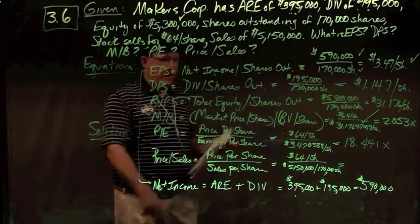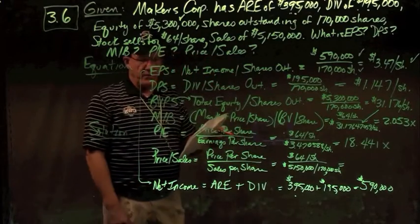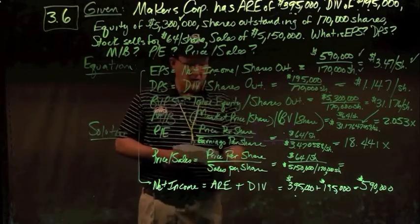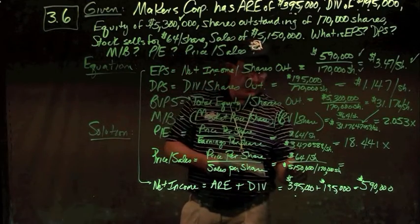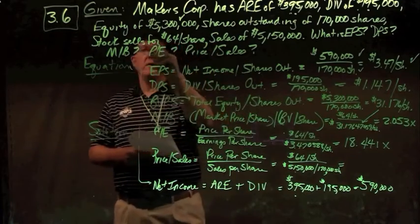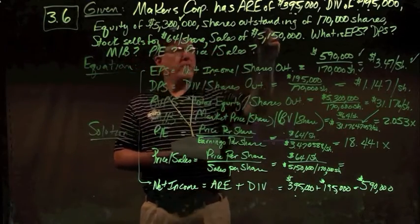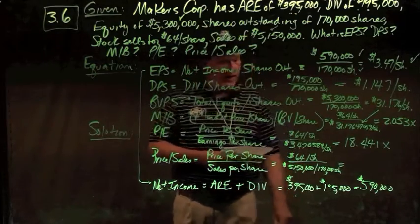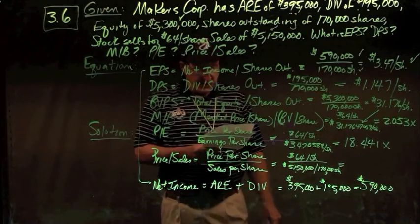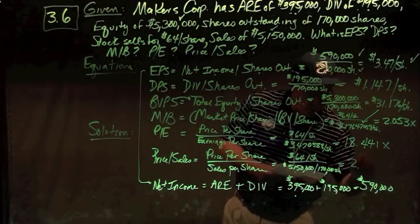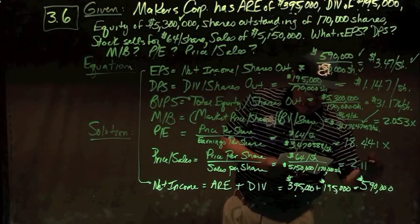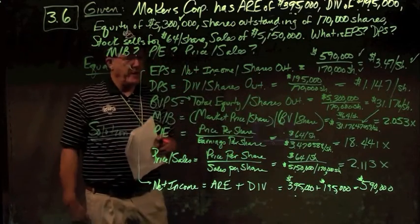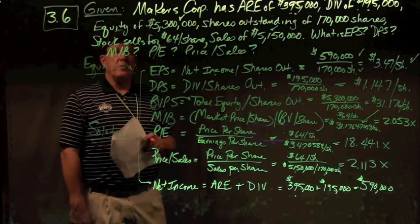Price-to-sales ratio is price per share — $64 — divided by sales per share, calculated as $5,150,000 divided by 170,000 shares. This gives a price-to-sales ratio of 2.113 times. There are your answers to problem number six.